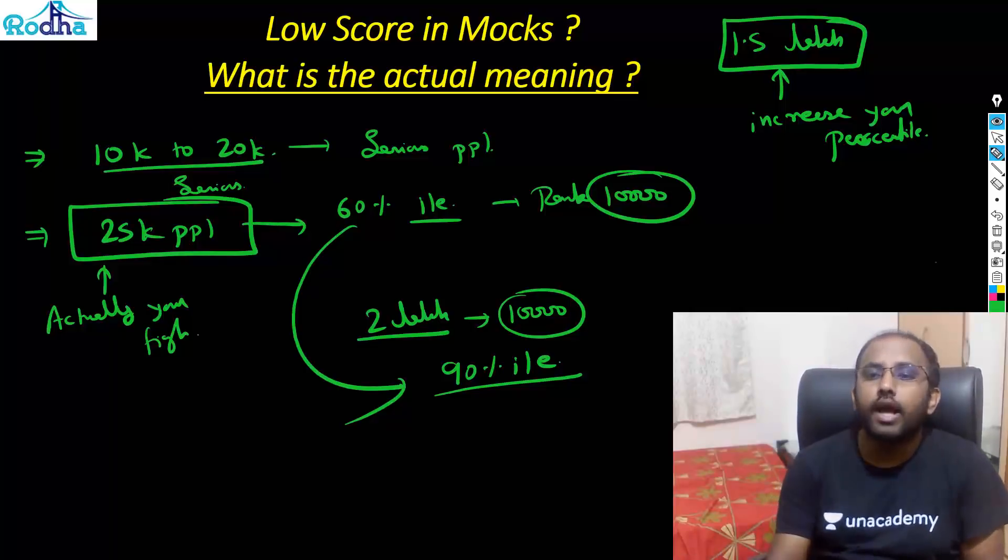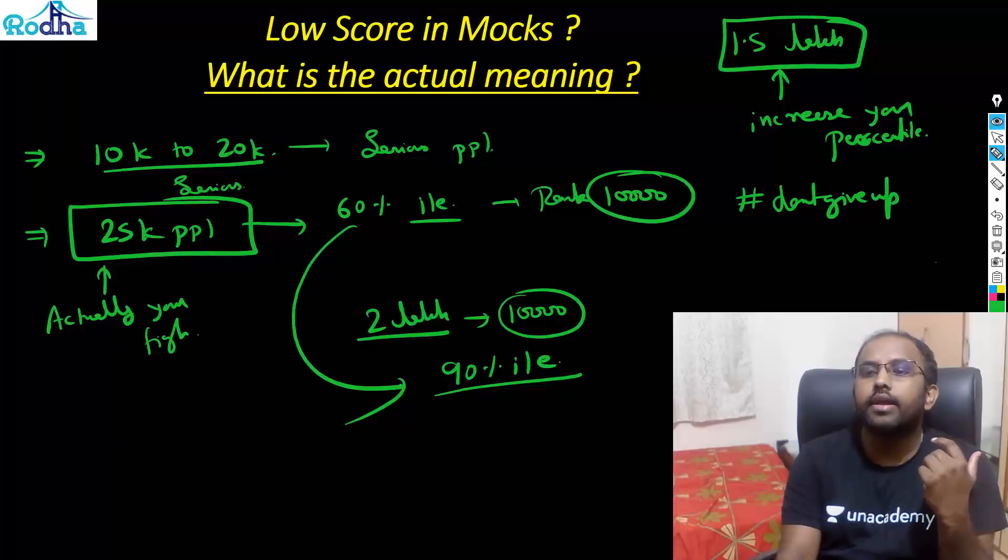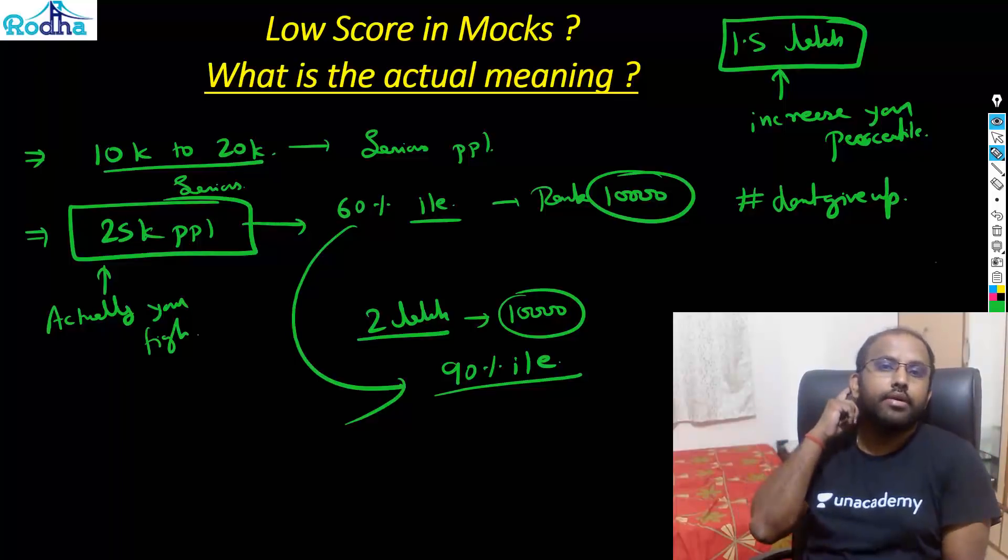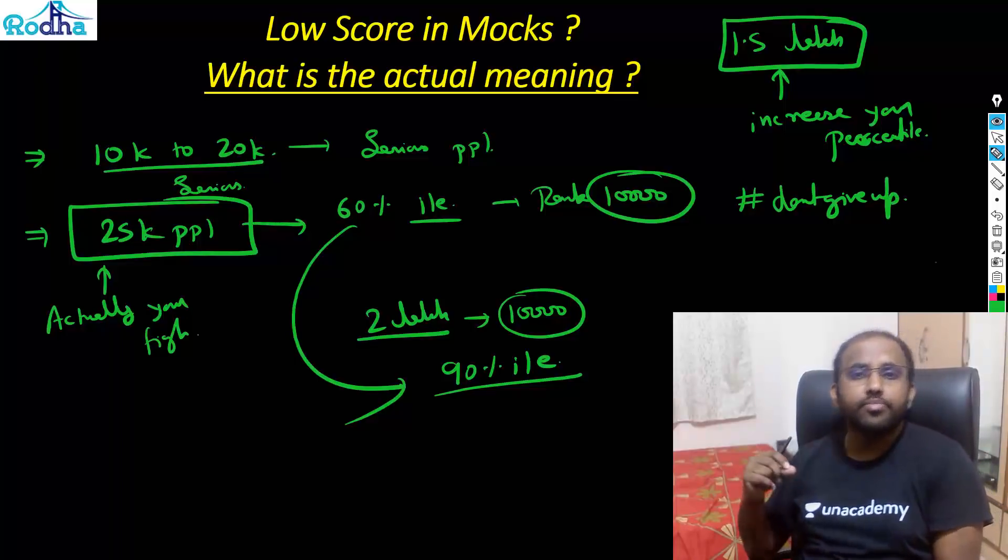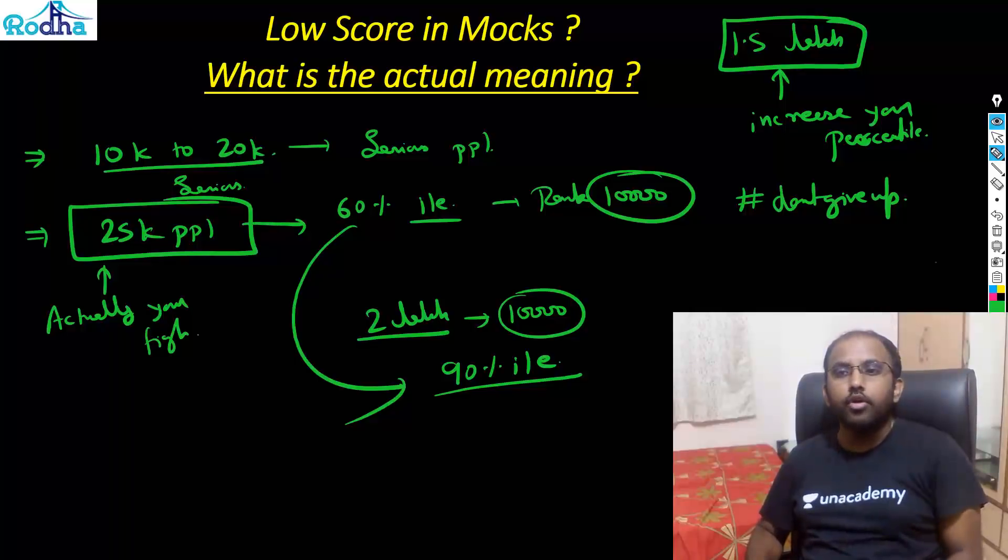So first of all you just have to don't get frustrated. Don't get frustrated and don't give up till CAT. Just keep on trying till CAT. So once you are in that 90 percentile range you have tried very hard. You are trying very hard. The paper suddenly level comes down and you are in that 95 percentile after that.